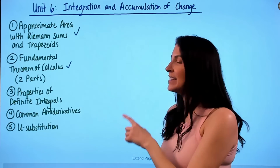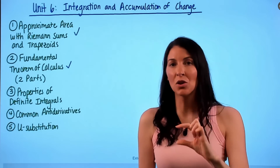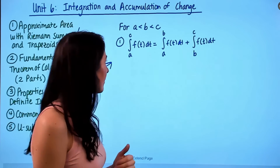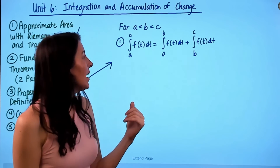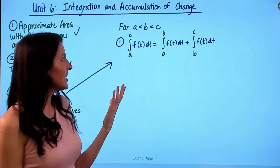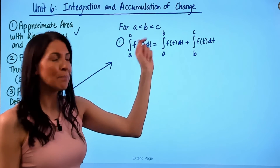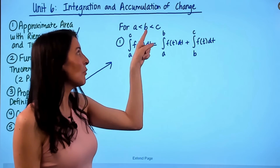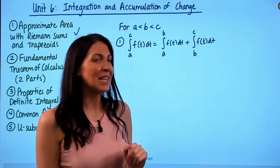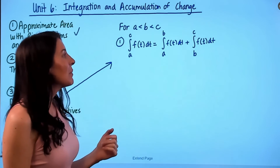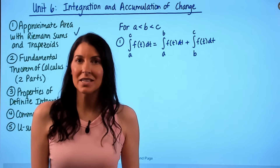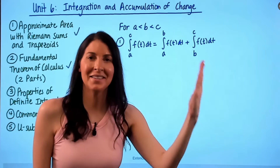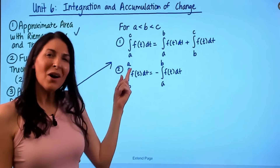Next are common properties of definite integrals. Remember, a definite integral has given a and b values (lower and upper limits), whereas an indefinite integral does not. The first property: if a < b < c, then the integral from a to c of f(t) dt equals the integral from a to b of f(t) dt plus the integral from b to c of f(t) dt — because you're adding the area from a to b to the area from b to c, which equals the total area from a to c.